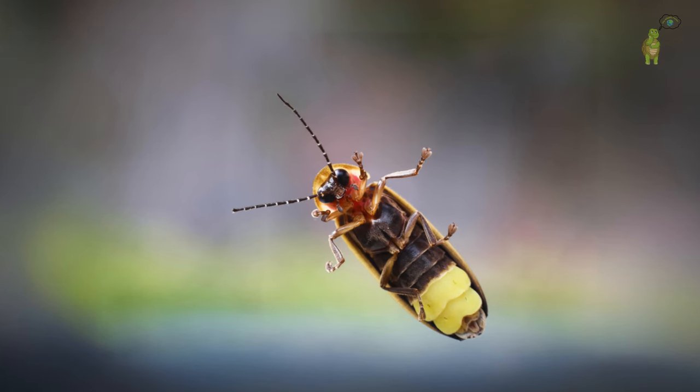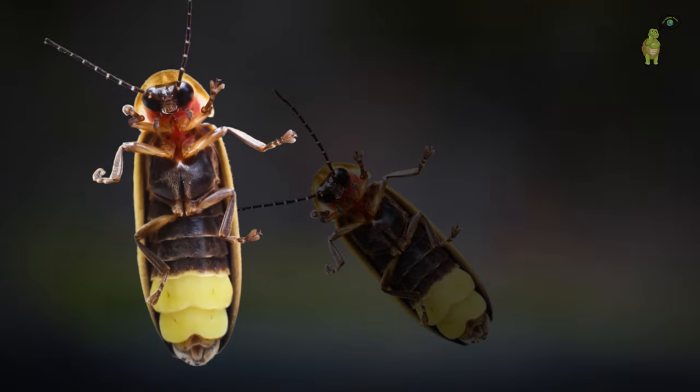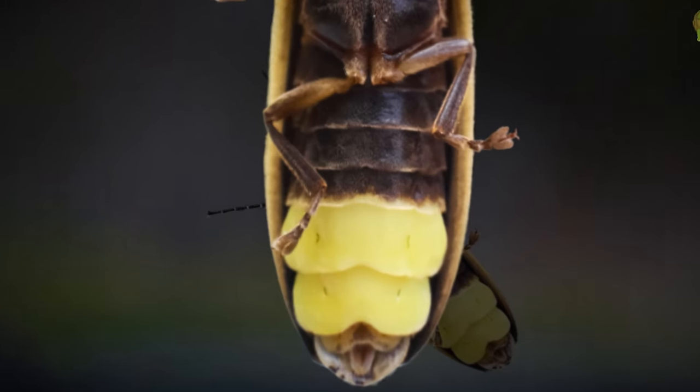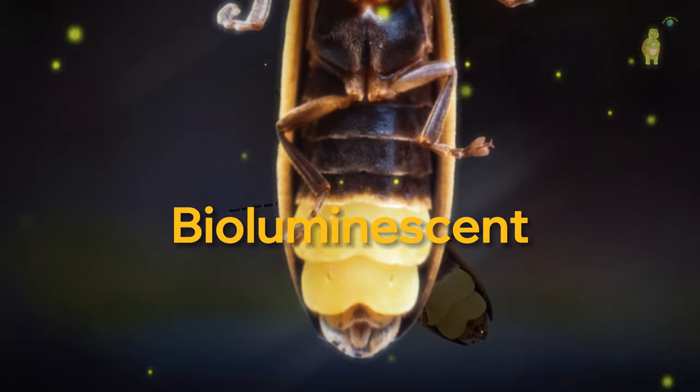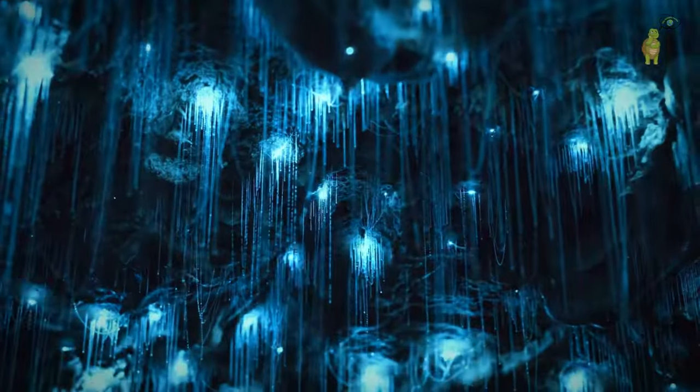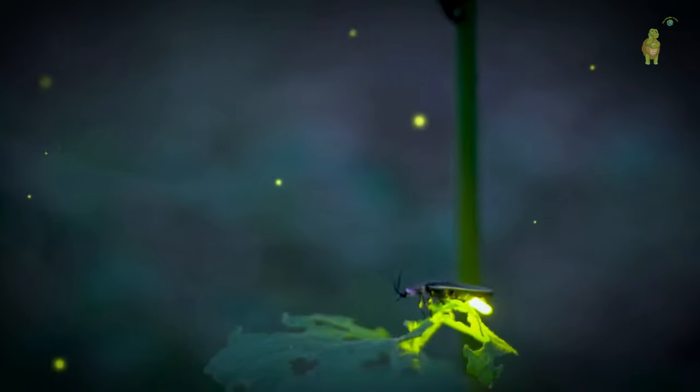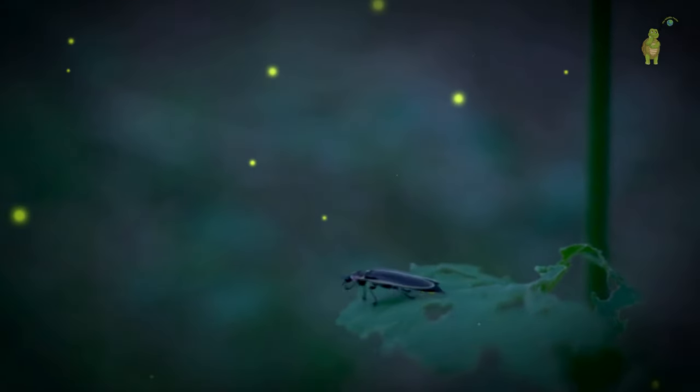The answer lies in the bug's abdomen, specifically in an organ called the lantern. This organ consists of specialized light cells, encased in a translucent exoskeleton. The magic happens in these light cells through a phenomenon called bioluminescence, where a chemical reaction in a living organism emits light. Fireflies are not the sole possessors of this power. Glowworms and certain deep-sea fish species also exhibit this capability. However, the firefly is arguably the most famous bioluminescent species on Earth.